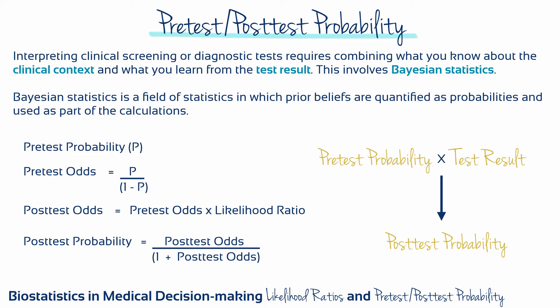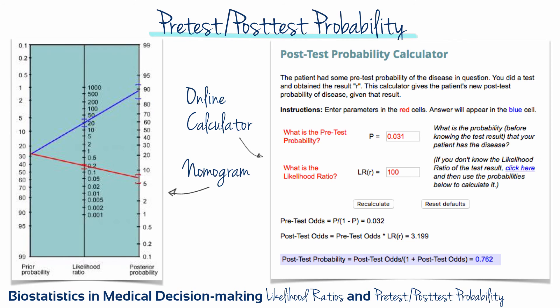The actual calculation involves quantifying the prior belief as a pretest probability, expressing that probability as pretest odds, and then multiplying the pretest odds by the appropriate likelihood ratio depending on whether the test result obtained was positive or negative. This will give you a measure of the post-test odds, which can then be re-expressed as a post-test probability. It's straightforward algebra, but many people use a nomogram or online calculator to save time.